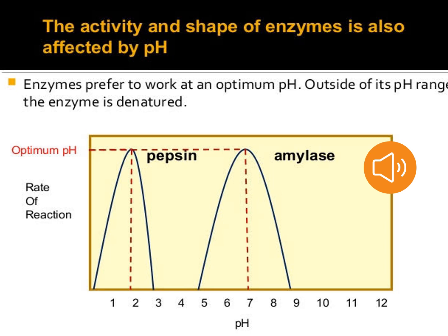The activity and shape of an enzyme is also affected by pH. Basically, enzymes prefer to work at an optimum pH. Outside of its pH range, the enzyme is denatured. Below 7, the pH is acidic range, and above 7 is the basic range. The enzyme pepsin works best in acidic conditions. The enzyme amylase works best at neutral pH, and trypsin is an intestinal enzyme that works best in basic conditions.